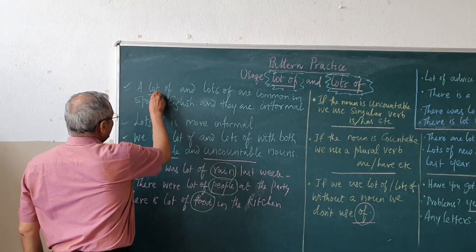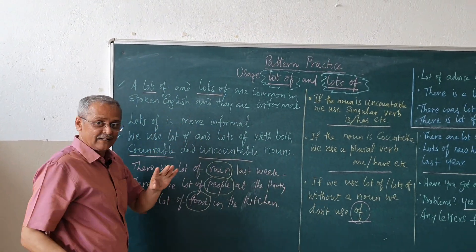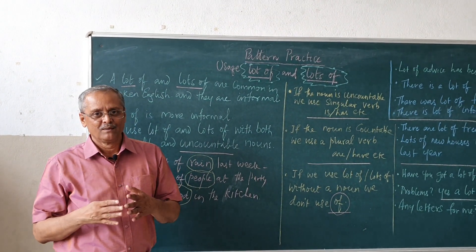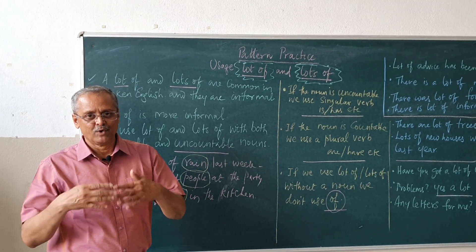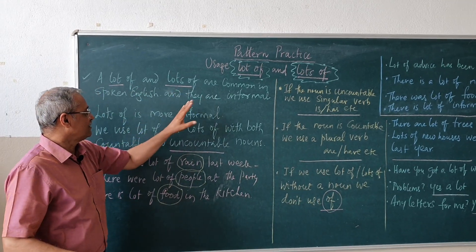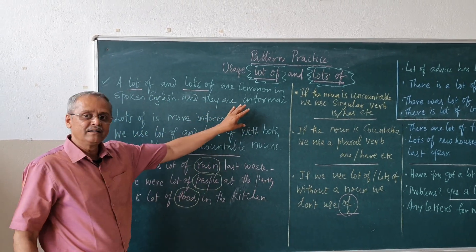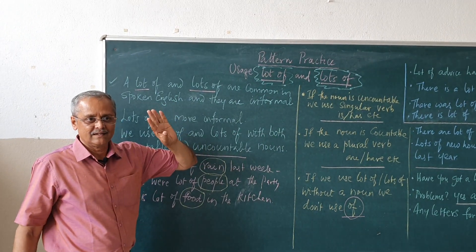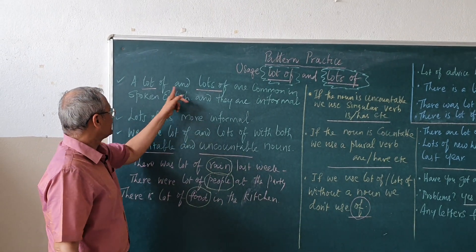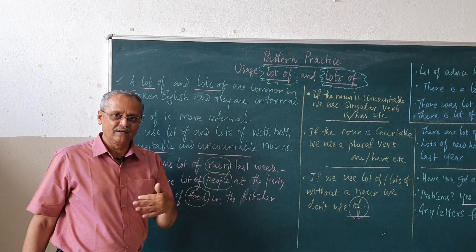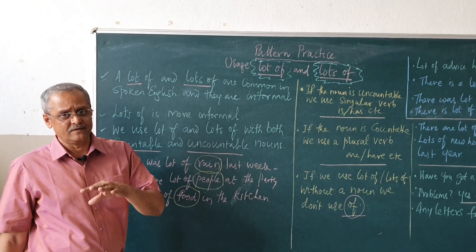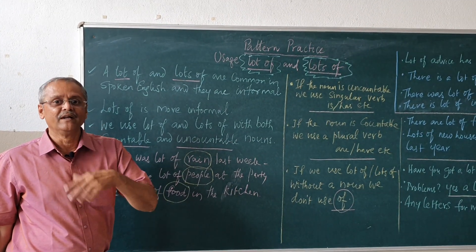'Lot of' and 'lots of' are common in spoken English. Normally we do not use them in written English, where we use 'many,' 'much,' 'more,' etc. In spoken English, 'a lot of' and 'lots of' are very common and are informal structures — we use them in an informal setup. The difference is that 'lots of' is more informal than 'lot of.' Both can be used interchangeably, but 'lots of' is the more informal one.